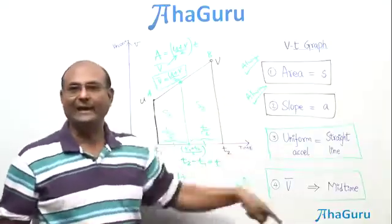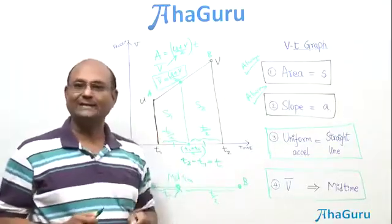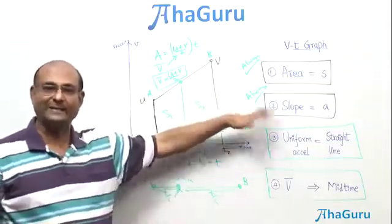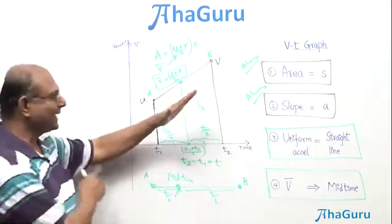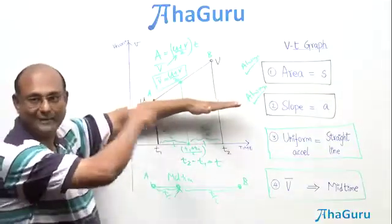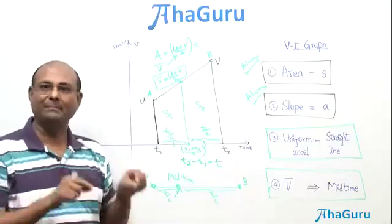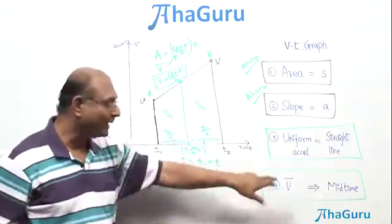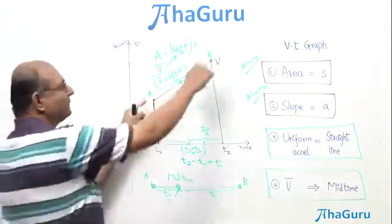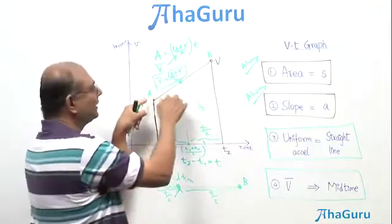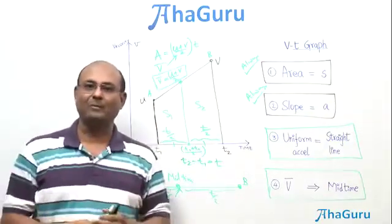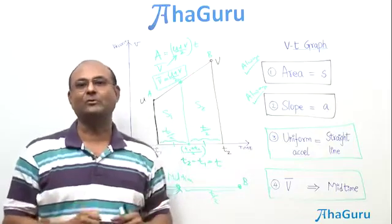So these are the four key ideas. First, area under the VT graph is displacement — true for any VT graph. Second, slope of the graph represents acceleration — always true. Third, uniform acceleration is represented by a straight line (upward, downward, or flat for zero acceleration). Fourth, for uniform acceleration, the average velocity equals the instantaneous velocity at the midtime. When we apply these four points to problems, you will see that VT graphs are very useful in solving questions.